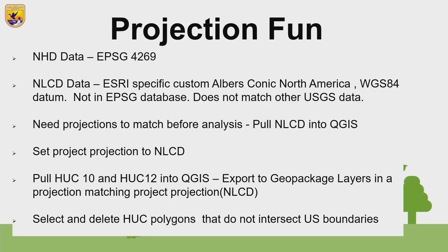Regarding projections: the NHD data as distributed is in EPSG 4269, which is not really useful for area analysis. The NLCD data came in an ESRI-specific custom Albers North America projection using WGS-84 datum, which I had never seen in any USGS dataset before. It doesn't match any other USGS data, but you want all your projections to match before doing any raster analysis. So I pulled the NLCD data into QGIS and set the projection environment to match the dataset, then reprojected the HUC-10 and HUC-12 datasets into geopackages in that same projection, and deleted the HUC polygons that fell outside the NLCD extent.